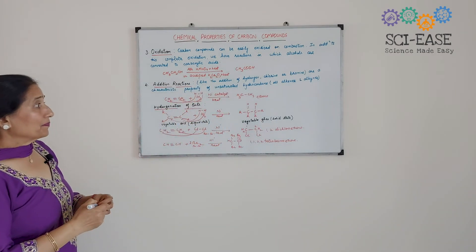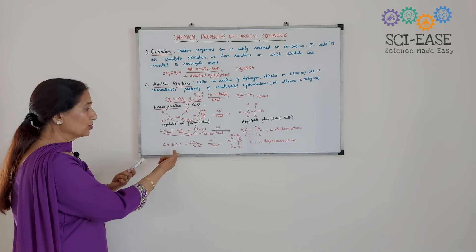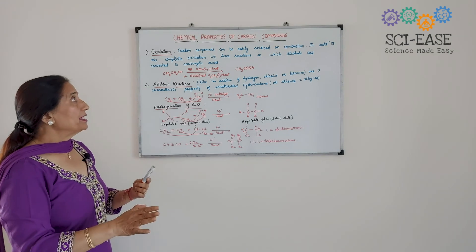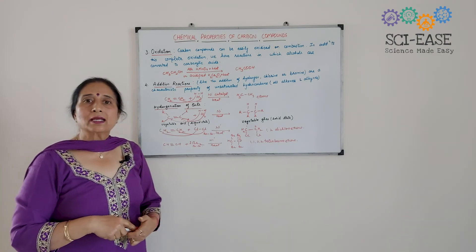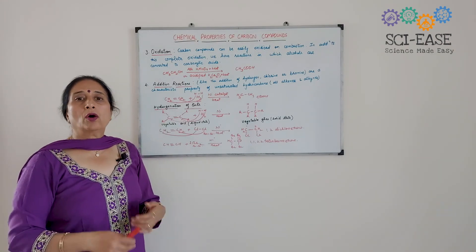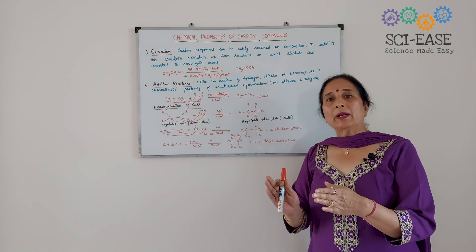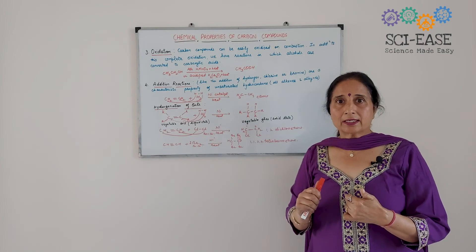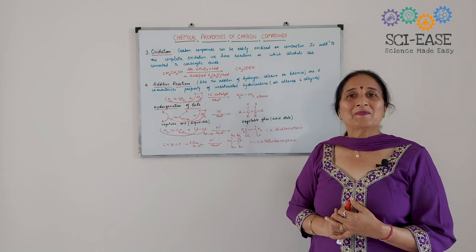So, addition of any molecule of H2, Cl2, or Br2 — and in the case of HCl, one H and one Cl are added — these are the addition reactions of carbon compounds, mainly the unsaturated hydrocarbons: alkenes and alkynes. Sometimes addition across propene or propyne may be asked; the addition will take place only across the double or triple bond. That is all about the chemical properties of carbon compounds, which are very, very important. Thank you.